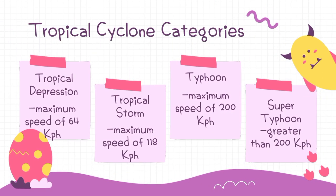Tropical cyclone categories: tropical depression if it has a maximum wind speed of up to 64 kilometers per hour; tropical storm if it has a maximum wind speed of up to 118 kilometers per hour; typhoon if it has a maximum wind speed of up to 200 kilometers per hour; and super typhoon if it has a wind speed of greater than 200 kilometers per hour.